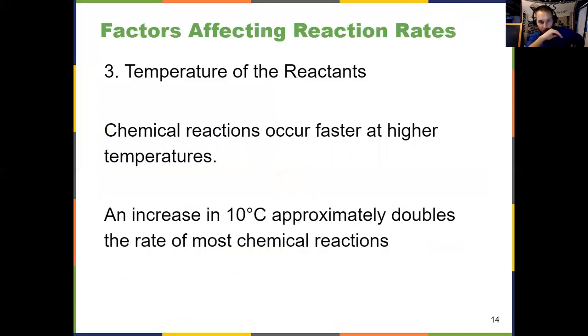Number three, temperature. Chemical reactions occur faster at higher temperatures. Higher temperature, faster reaction. Which is not to say that if you want to double a reaction speed, you need to double the temperature. Usually that's overkill. A good rule of thumb is you usually only need an increase of about 10 degrees Celsius to double the rate. There are a ton of exceptions to that. That's just a guiding rule. But all I need you to know, higher temperature, faster reaction. And we'll explain why for all these in a later video.